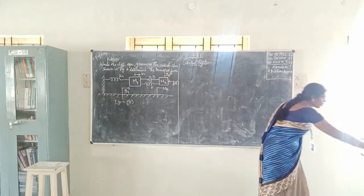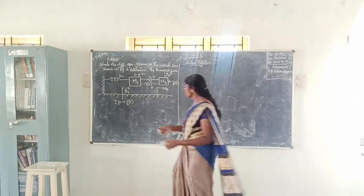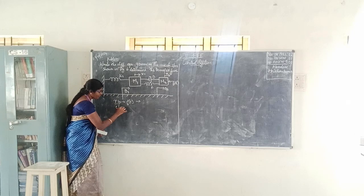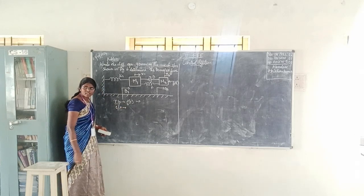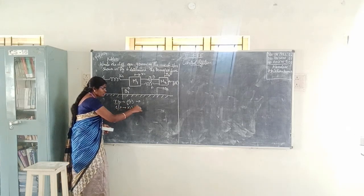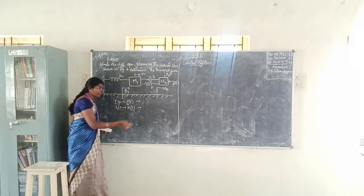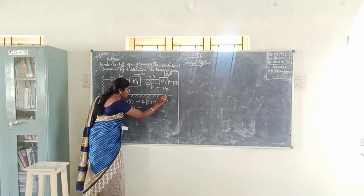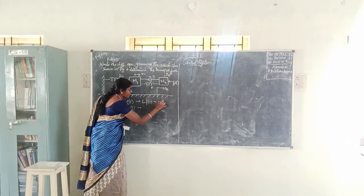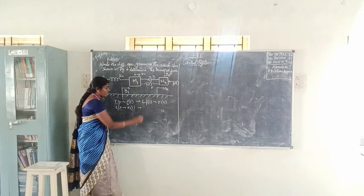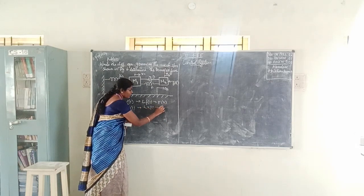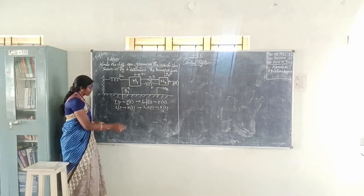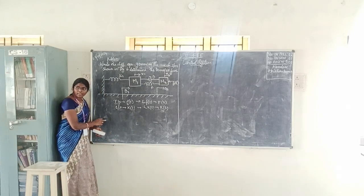Next, we need to identify the output. The output is x(t). When we take the Laplace transform, the Laplace transform of x(t) will become X(s). After that, we have to write the differential equations governing the system.